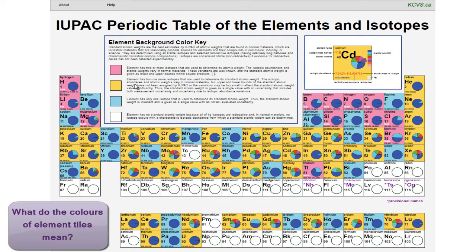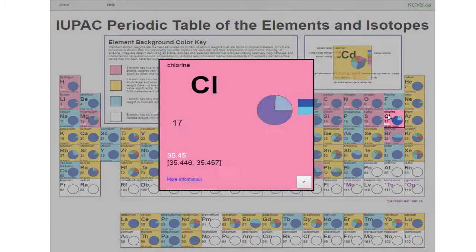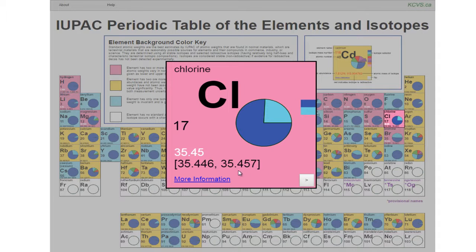What do the colors of element tiles mean? Pink is the background color for an element if two or more isotopes are used to determine its standard atomic weight and the variation in isotopic abundances in normal materials is large and well known. The standard atomic weight is given as upper and lower bounds within square brackets.